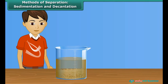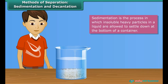Jack filled a beaker with muddy water and left it undisturbed for some time. After some time, he was surprised to see the beaker. The beaker had clear water. Mud being heavy had settled down at the bottom of the beaker while the water formed the upper layer. This process of deposition of mud at the bottom of the beaker is called sedimentation, and the layer of mud is called the sediment.